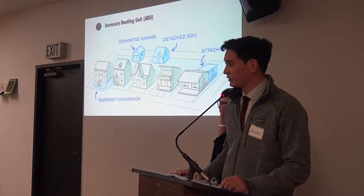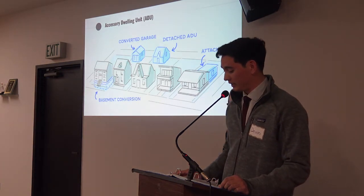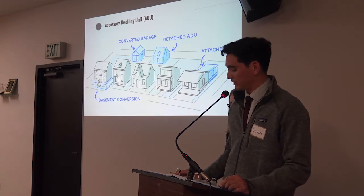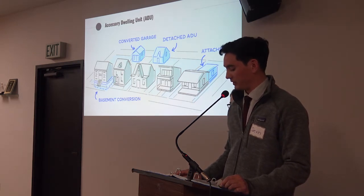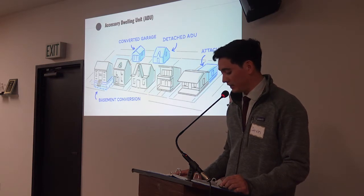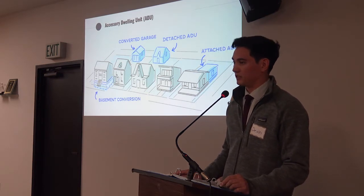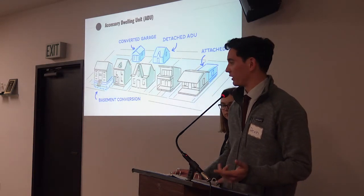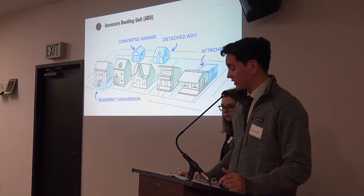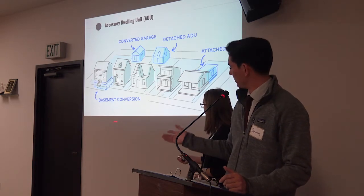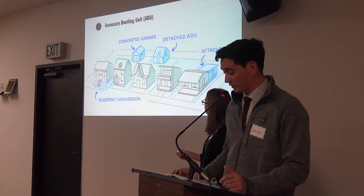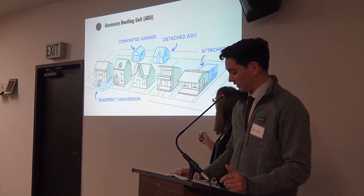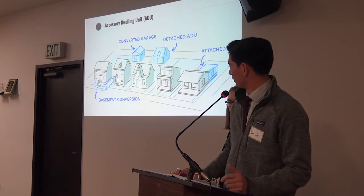An accessory dwelling unit, or ADU, is a smaller independent residential dwelling unit located on the same lot as a single-family detached home. ADUs go by many different names throughout the United States, including accessory apartments, secondary suites, and granny flats. ADUs come in many forms, including basement conversions, standalone units such as converting garages or detached structures, and attached units to new or existing homes.